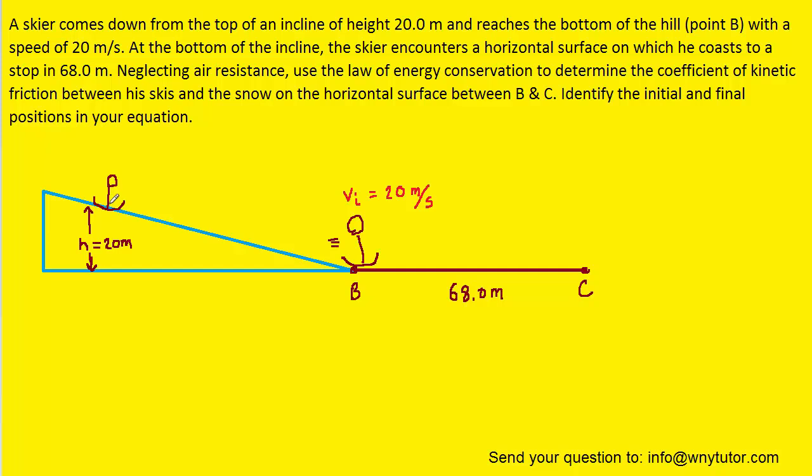We have the skier beginning 20 meters off the ground on the hill. He slides down that hill and reaches point B, at which point he's moving at 20 meters per second, and then he's going to coast until he comes to rest over here at point C. Our job is to use the conservation of energy to determine the coefficient of kinetic friction along the surface from B to C.